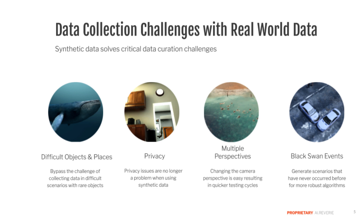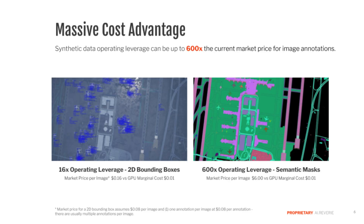Synthetic data can bypass all of these issues, and the big point is that there are advantages beyond just cost. But costs are important: generally speaking, you'll have to pay around 10 cents for a labeler to put a box around an object. Once you start moving to segmentation masks, that's going to cost an average of $6 an image. If you need hundreds of thousands of these images, the cost becomes absolutely prohibitive. With synthetic data, the marginal costs scale with GPU time, and from our estimates, that becomes less than a penny for any kind of annotation you want, along with the creation of the image itself.